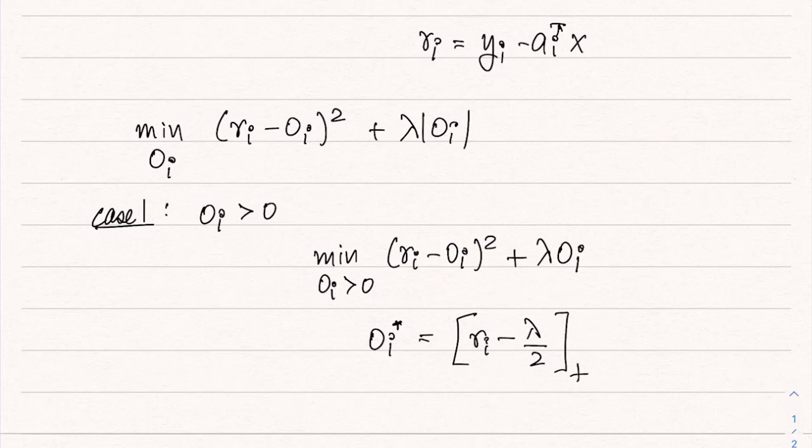Essentially we will get, if we solve this quadratic problem, we would get r_i minus lambda by 2. But this is only valid when O_i is positive because we assume that O_i is positive. So this is only valid when r_i is greater than lambda by 2. So it will basically be 0 otherwise.